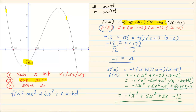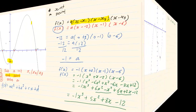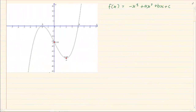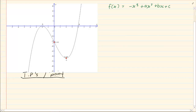That is the first type. Now let us look at the next question. The second type is where they give you the turning points and a point. When they give you a turning point, you know that the derivative equals m, which we link to the derivative. You set it equal to 0, and that gives your turning points.